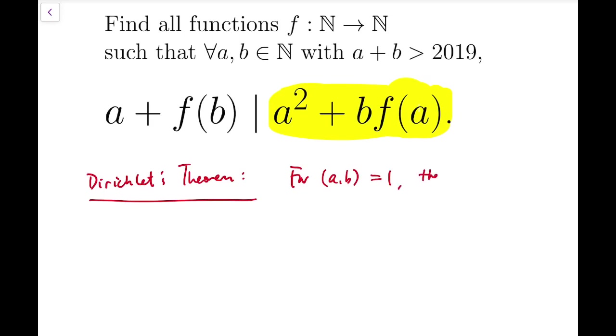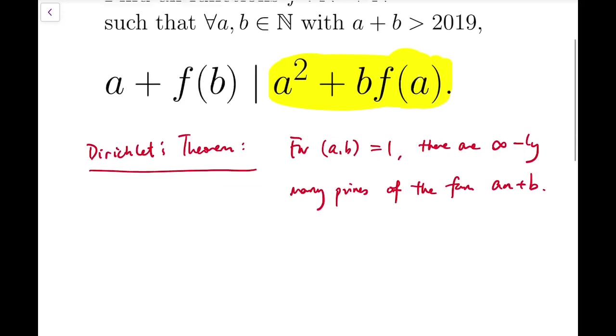It says for a, b that are co-prime, there are infinitely many primes of the form, just of the form, a n plus b. Or I can say infinitely many primes that are congruent to b mod a.